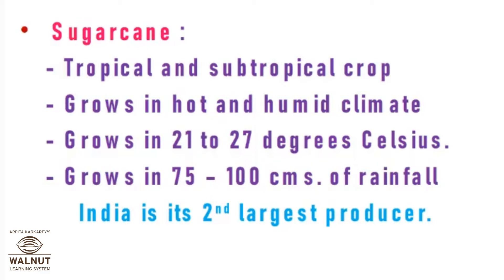Sugarcane grows in temperatures of 21 to 27 degrees Celsius and requires 75 to 100 cm of rainfall. You can prepare a table including required rainfall, temperature, and places found. That organization will help you remember details for each crop.